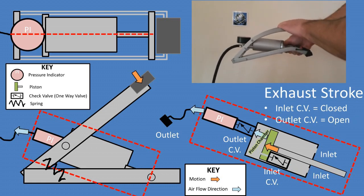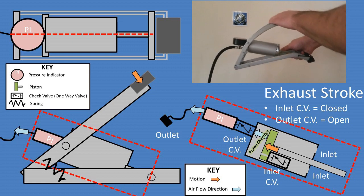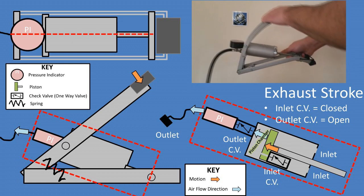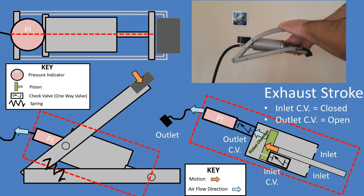During the exhaust stroke, the piston is fully compressed and air is pushed out of the piston chamber and through the outlet check valve. The inlet check valve remains closed while the outlet check valve is open. The air through the outlet goes to the device you are trying to fill and the pressure difference between atmospheric pressure and the outlet pressure is measured at the pressure indicator.